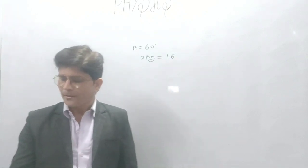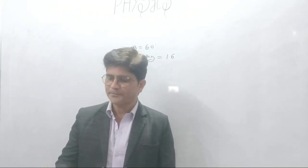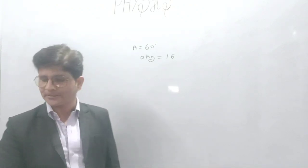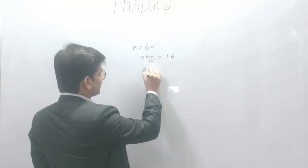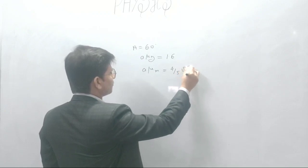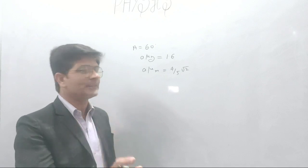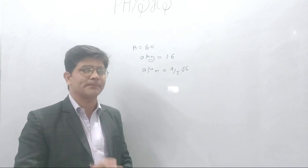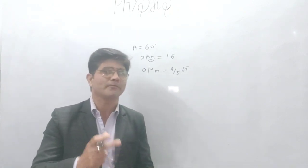We are given the refractive index of the medium as 4 by 5 root 2. The angle of minimum deviation is to be calculated when this prism is placed in this medium. So we require the refractive index of the material of the prism with respect to that medium in which the prism is placed.